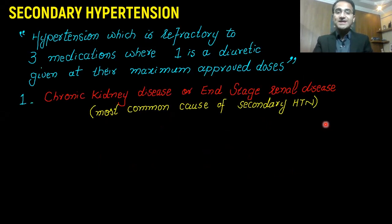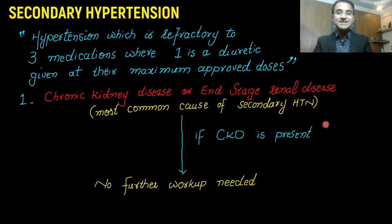Chronic kidney disease or end-stage renal disease is the most common cause of secondary hypertension. If chronic kidney disease is present, no further workup for secondary hypertension is needed.